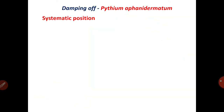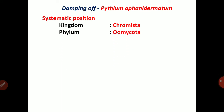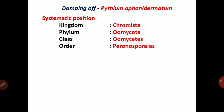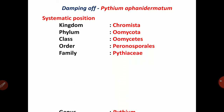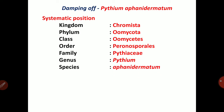First of all, damping off is caused by Pythium aphanidermatum. Its systematic position is: Kingdom Chromista, Phylum Oomycota, Class Oomycetes, Order Peronosporales, Family Pythiaceae, Genus Pythium, Species aphanidermatum.